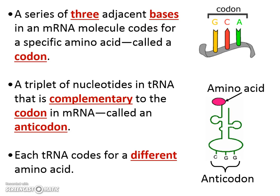Every time three letters are read on the mRNA strand, we call those three letters a codon. The codons will code for different proteins. A codon consists of three adjacent bases — adenine, cytosine, guanine, and uracil. A triplet is another way of saying three. The triplets complementary base pair with the tRNA, and when they're on the tRNA that's called the anticodon.